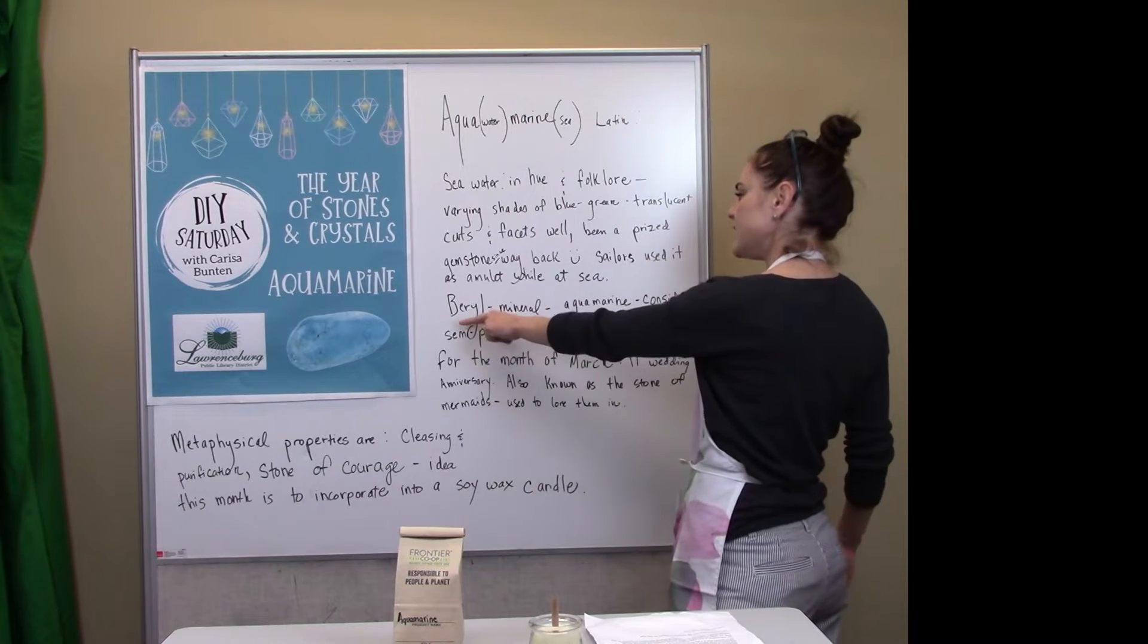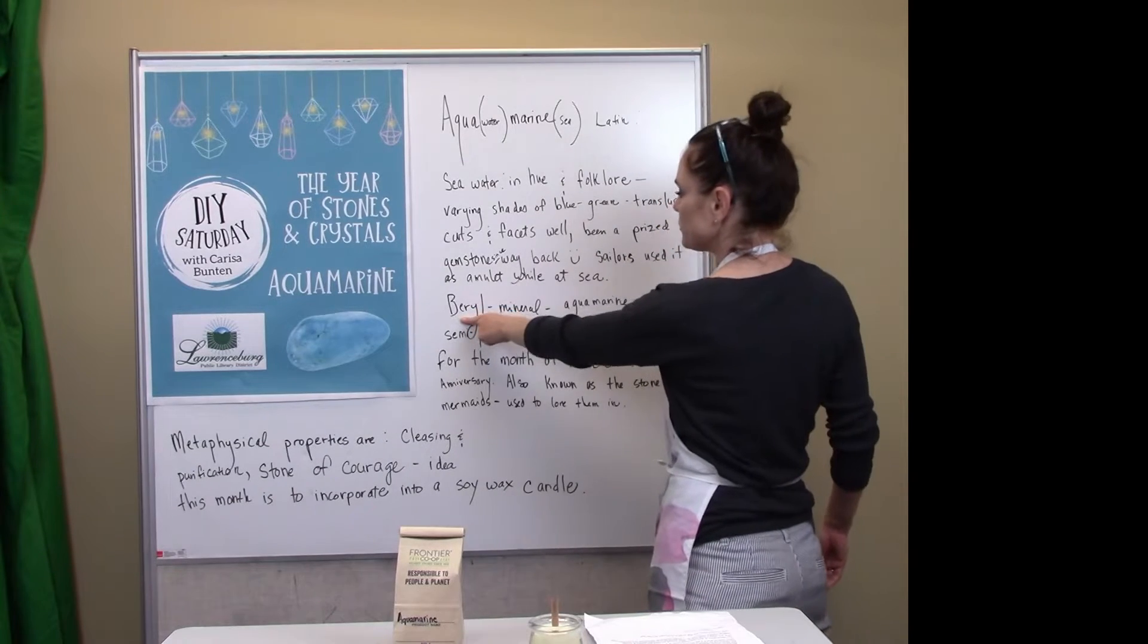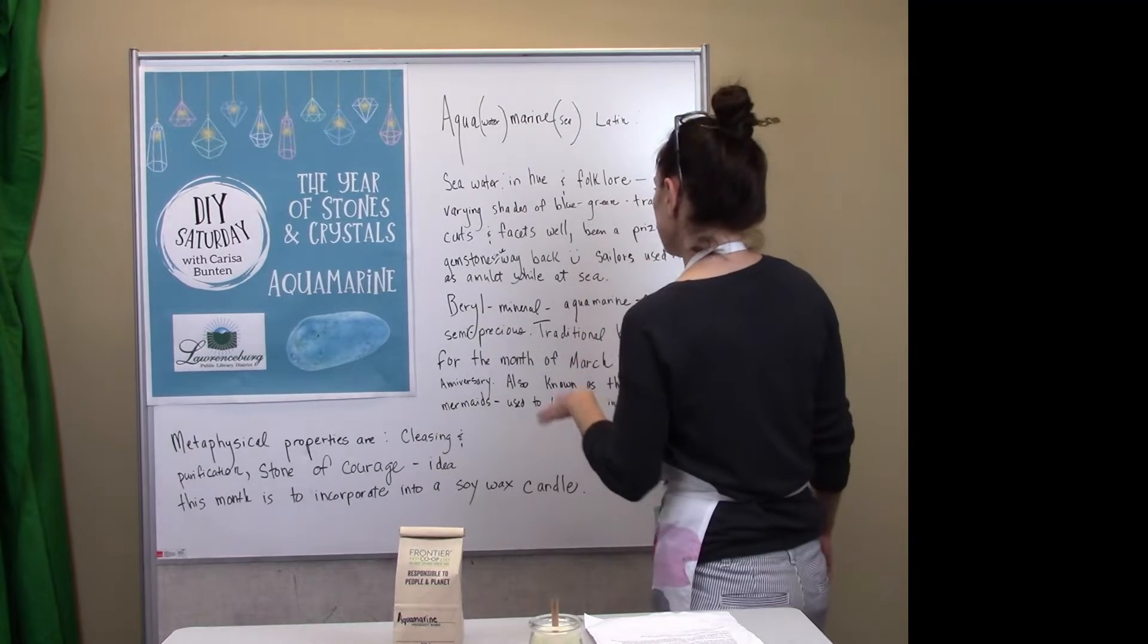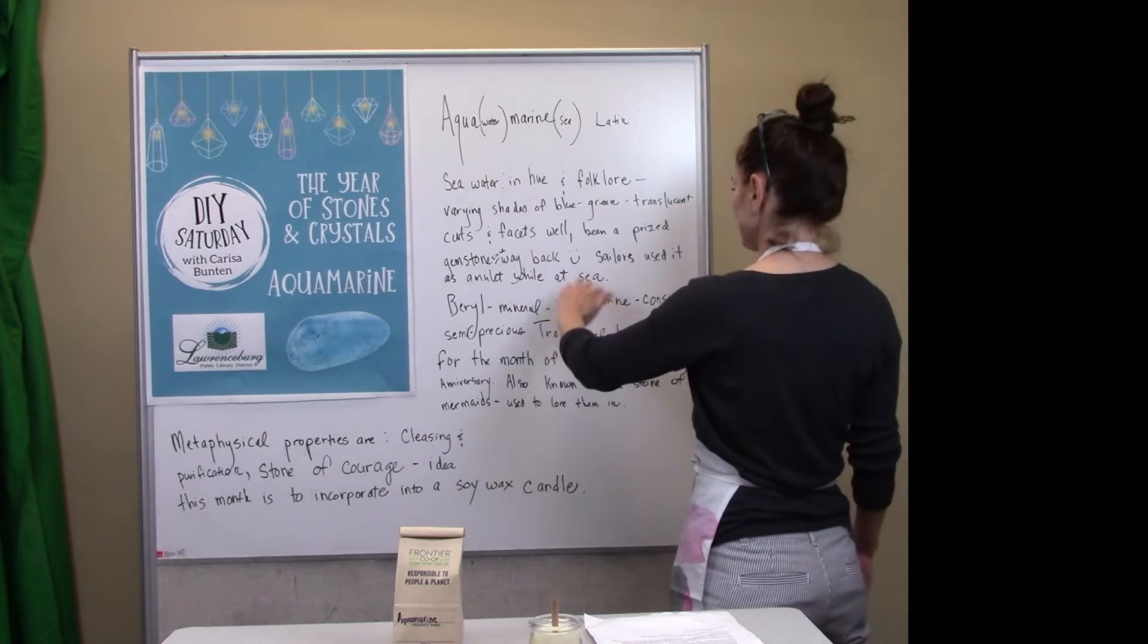And to touch back on it again, its true name is beryl or burl, however you would want to say it, which is a mineral that is mined. And aquamarine kind of is sort of a byproduct of mining for the mineral.